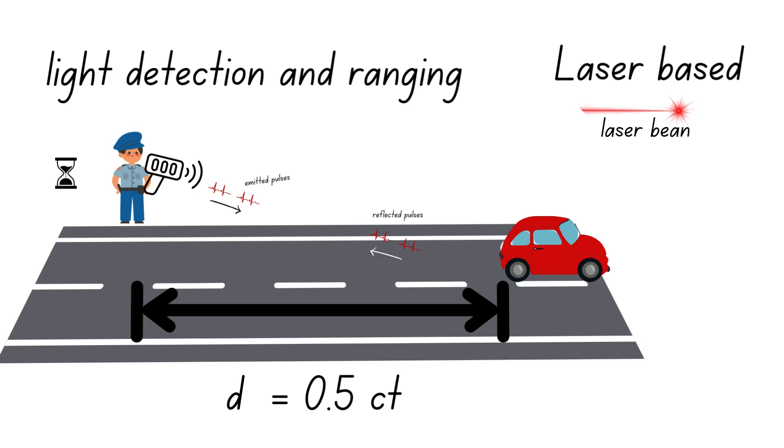By taking multiple measurements over a short period, the gun calculates the change in distance and determines the object's speed. Laser speed guns are highly accurate because they use precise light pulses and narrow beams, reducing the chance of interference from other objects.